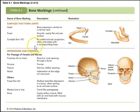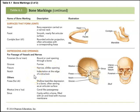Depressions and openings are usually passageways for vessels and nerves. These include: foramina (round or oval openings through a bone); grooves (furrows where vessels travel); fissures (narrow, slit-like openings); notches (indentations at the edge of a structure); fossae (shallow basin-like depressions — e.g., the subscapular fossa); meatus (canal-like passageways); and sinuses (cavities within a bone filled with air and lined with mucous membranes — e.g., the paranasal sinuses).